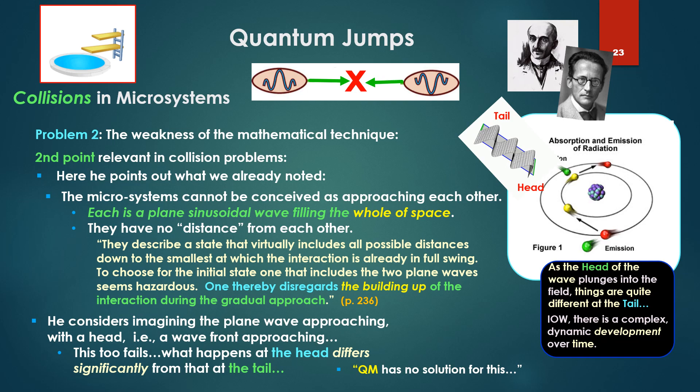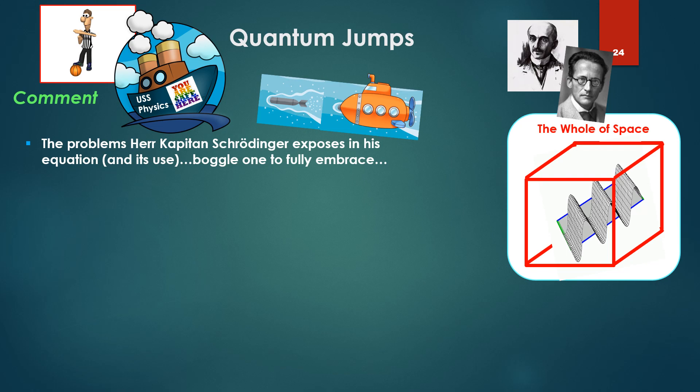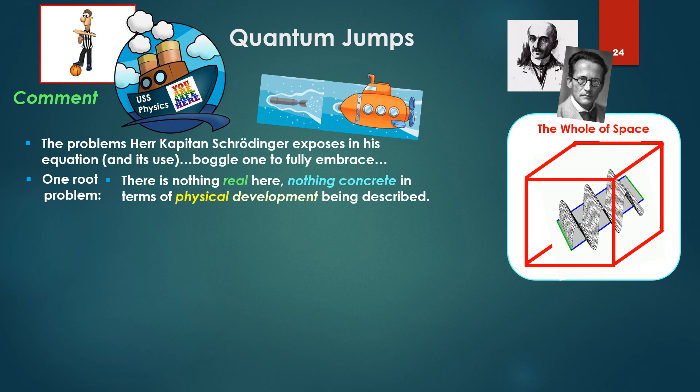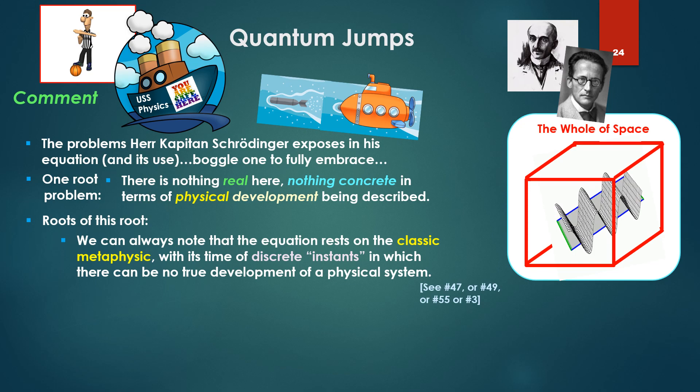What happens at the head differs significantly from at the tail. It is just the head of the wave plunges into the field. Things are happening quite differently at the tail. In other words, there is a complex dynamic development over time. Quantum mechanics, says Schrödinger, has no solution to this. Problems Schrödinger exposes in his equation boggle one fully to embrace. One root problem: there is nothing real here, nothing concrete in terms of physical development over time being described.